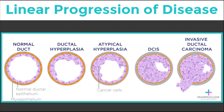Ductal hyperplasia is a benign process that happens commonly. As the epithelial layer thickens, sometimes some of the cells begin to turn abnormal. This is called atypical ductal hyperplasia, which is like a precursor to breast cancer. As the epithelial layer continues to thicken, the cells get more and more abnormal, beginning to fill the terminal duct.